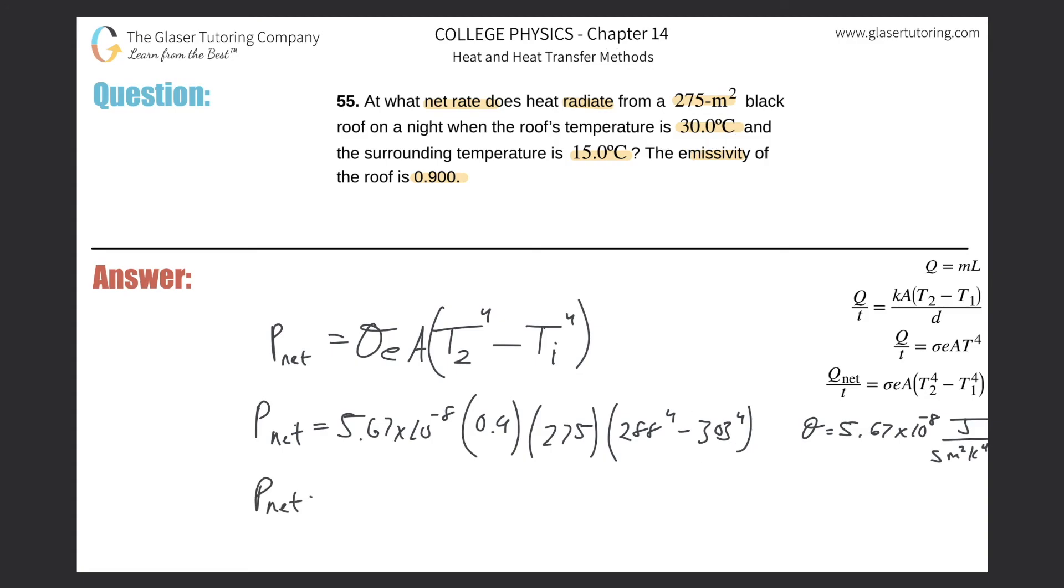All you got to do is just calculate this. So throw it on into the calculator. 5.67 times 10 to the negative eight multiplied by 0.9 times 275 multiplied then by parenthesis 288 raised to the fourth minus 303 raised to the fourth. And what do you get? I get approximately negative 2.17 times 10 raised to the fourth.